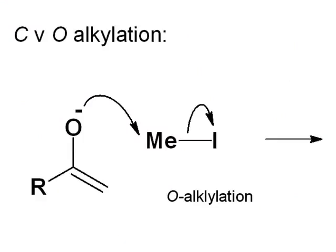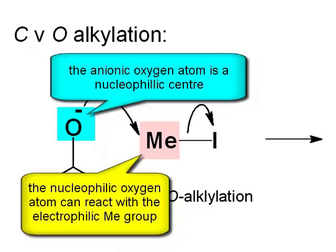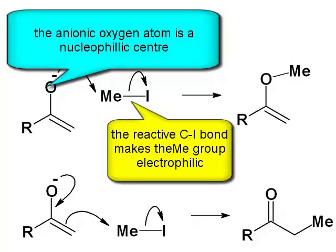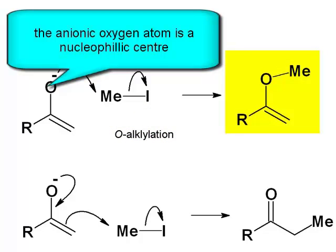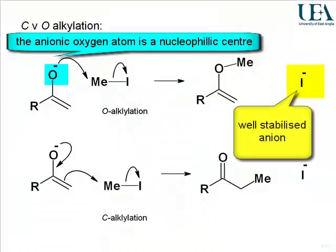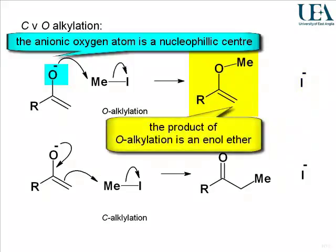Let's look at the top system first. We have an O with a negative charge written against it — a nucleophilic centre. So we can form a bond between that oxygen atom and the mesyl group and break the carbon-iodine bond. In that process, we will end up with the product structure with the mesyl group attached to the oxygen and a well-stabilised iodide anion to balance up the energies. This is now not an enol form; it's the ether of an enol. So you can refer to that product of O-alkylation as an enol ether.